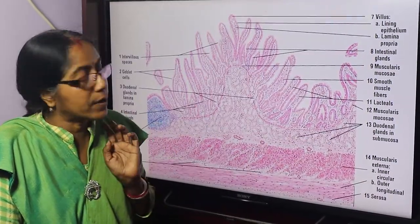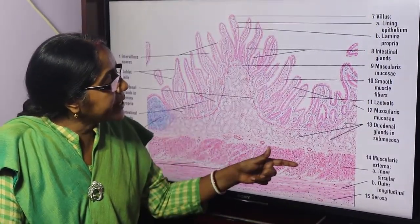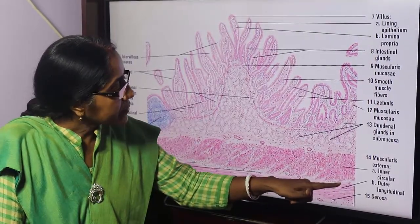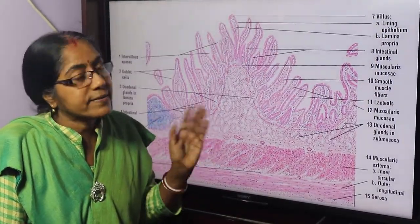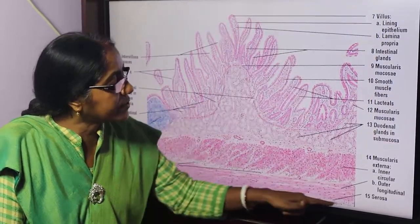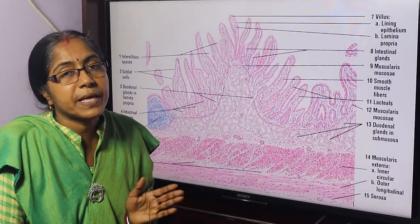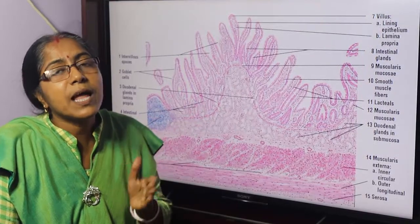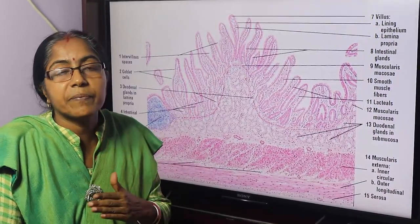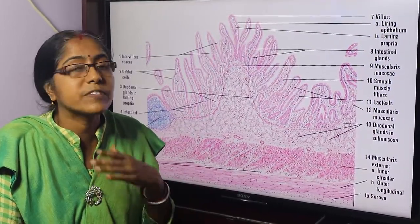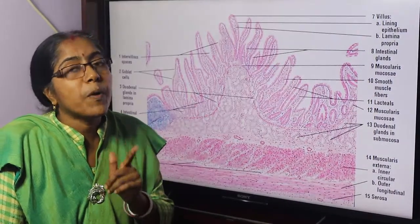This is the muscular layer — outer longitudinal and inner circular layer. This is the serosa. Serosa is a loose connective tissue covered by simple squamous epithelium. A question about the duodenum: it is a retroperitoneal organ. We know the anterior surface is covered with peritoneum, but the posterior surface is devoid of peritoneum. The duodenum is a retroperitoneal organ except for its proximal 2.5 cm.